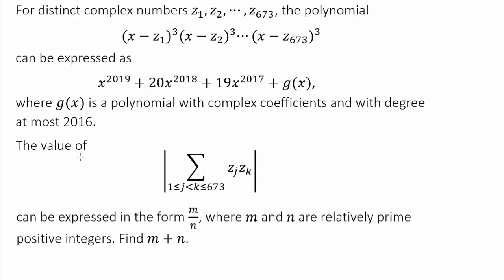Anyway, let's read on. The value of this absolute value of z sub j times z sub k, where k is always greater than j, and they range between 1 and 673, can be expressed in the form m over n, where m and n are relatively prime positive integers, and we wish to find m plus n.